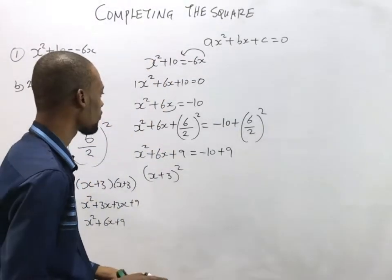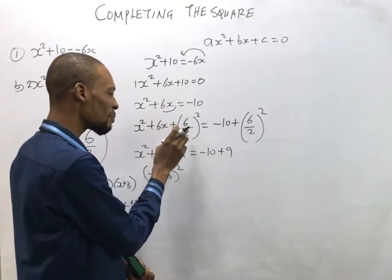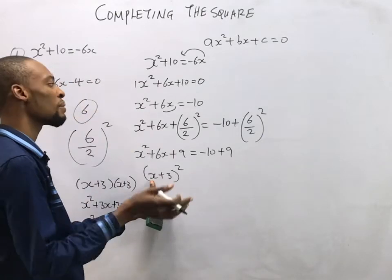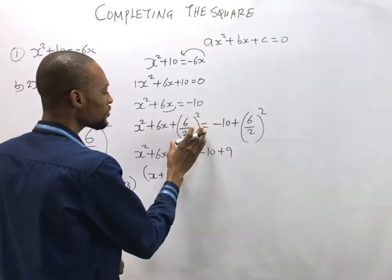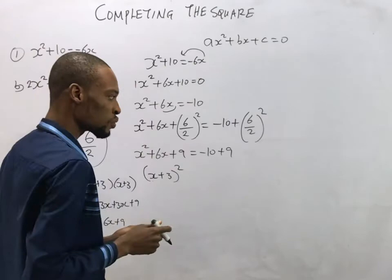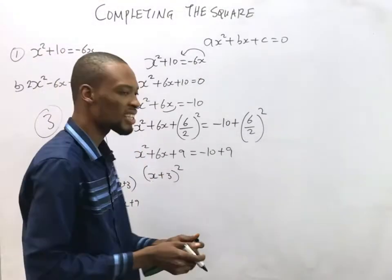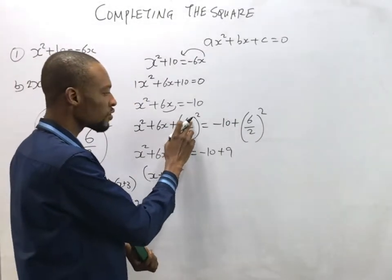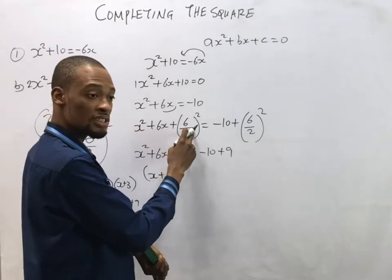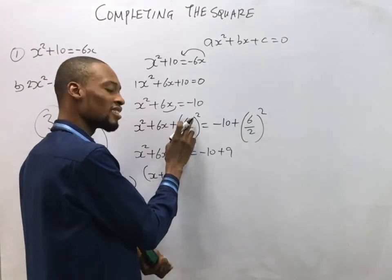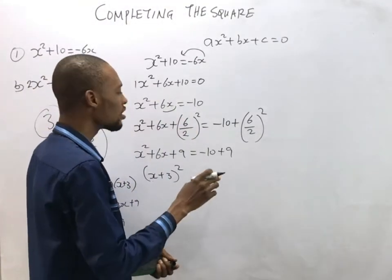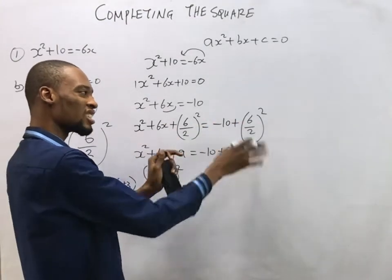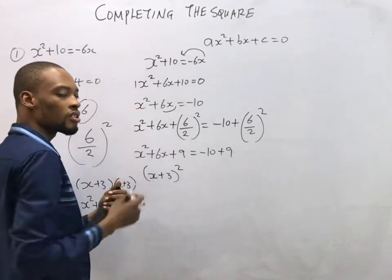Here's a useful shortcut: when you divide the coefficient of s by 2, the answer is exactly what you place inside the bracket. For example, if the coefficient of s is 6, divide by 2 to get 3, so write (s + 3)². If the coefficient were 12, halving gives 6, so you'd write (s + 6)². If the coefficient were 10, halving gives 5, so you'd write (s + 5)². This is why the method is called completing the square — we're creating a perfect square.